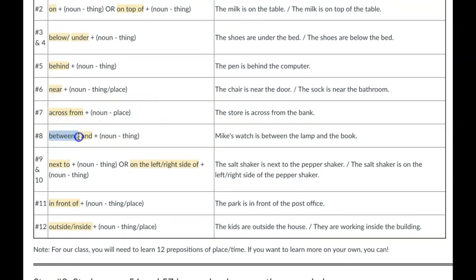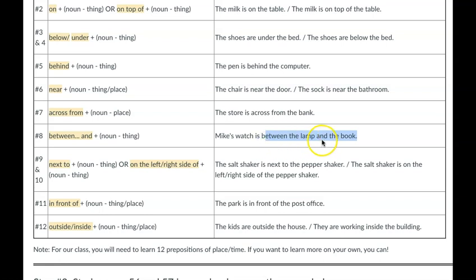Number eight: when you use 'between,' you need a noun after 'between,' then 'and,' then another noun. For example: Mike's watch — where is the watch? Between the lamp and the book. So the structure is: between + noun + and + noun.